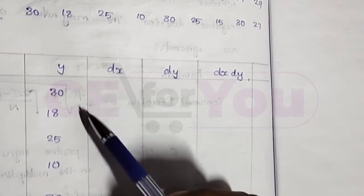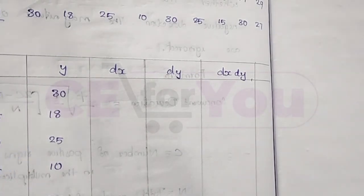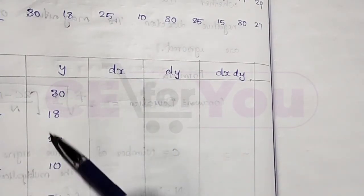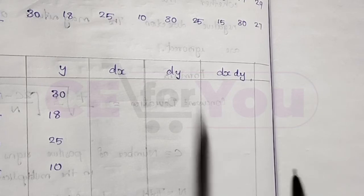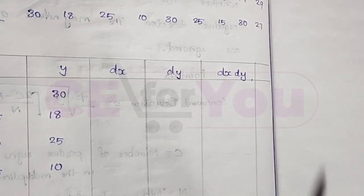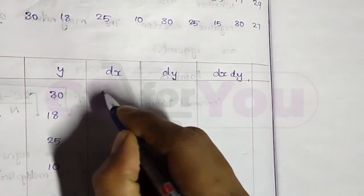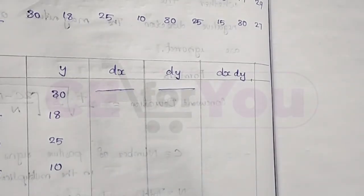Now we fill in the dx and dy columns. In the first row we compare consecutive values to get the sign. This gives us plus and minus signs for dx and dy.